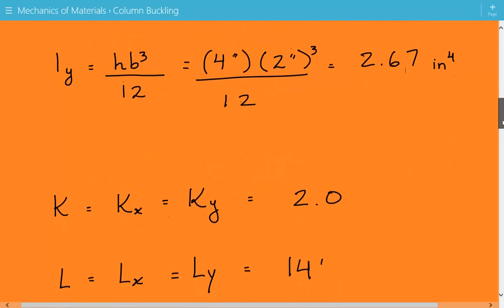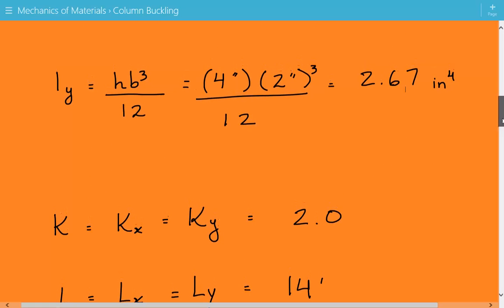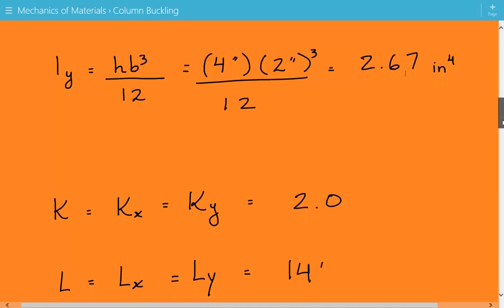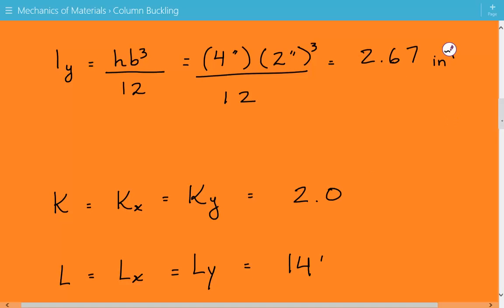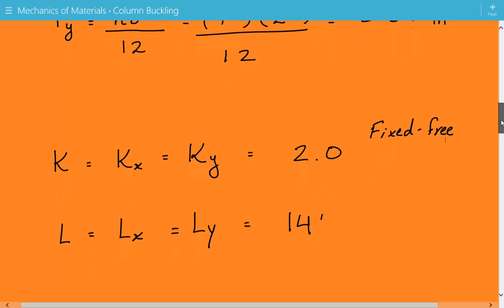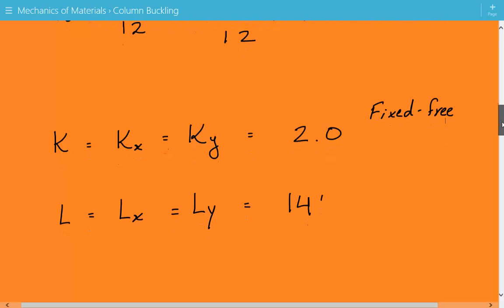The effective length factor K for both axes is equal to 2.0 because when you have fixed and free boundary conditions, the effective length factor equals 2.0. The unbraced length for both axes is 14 feet.